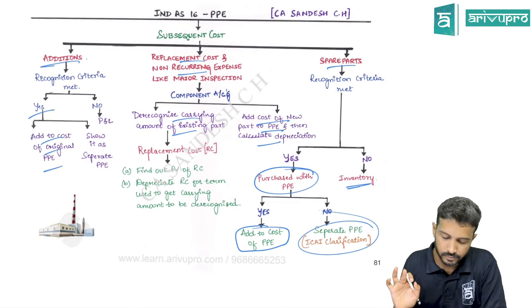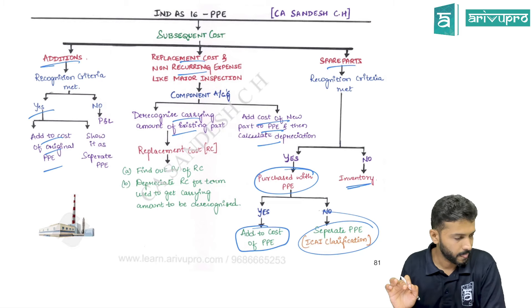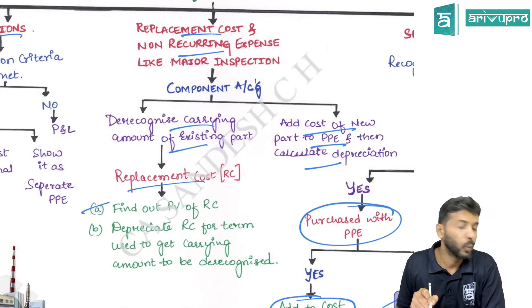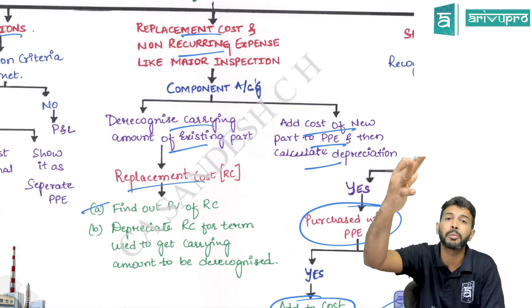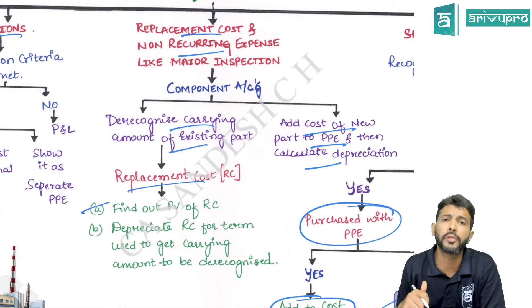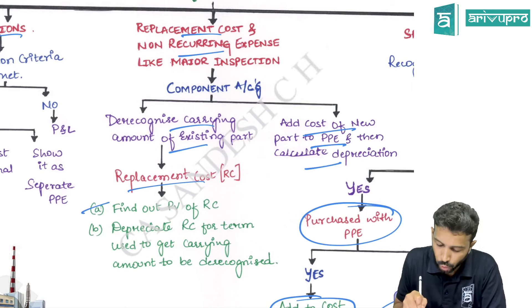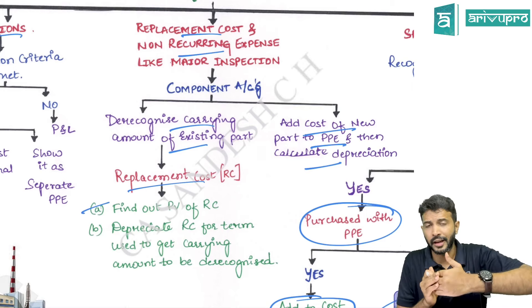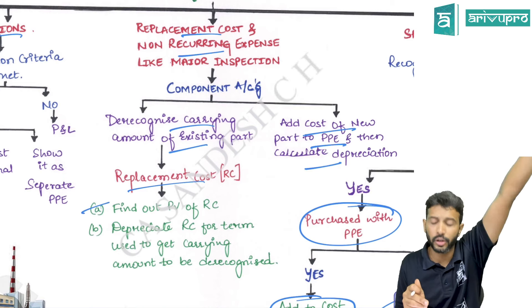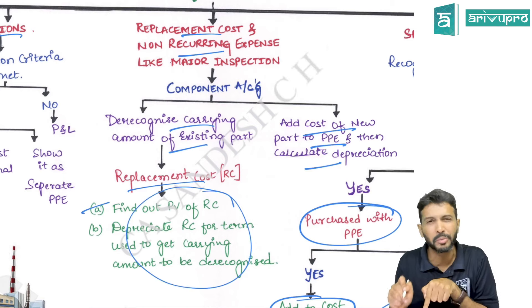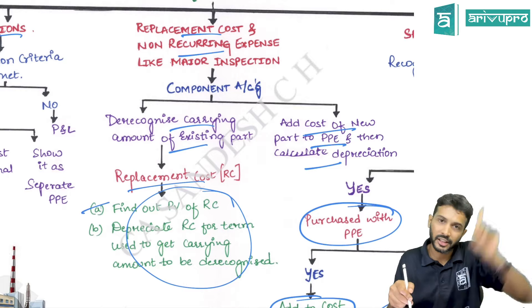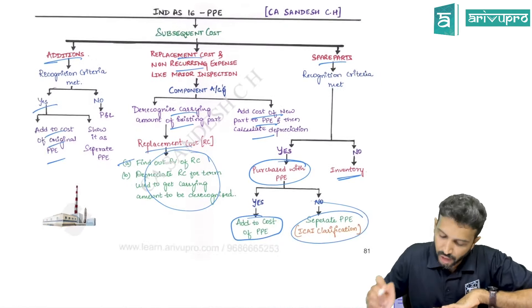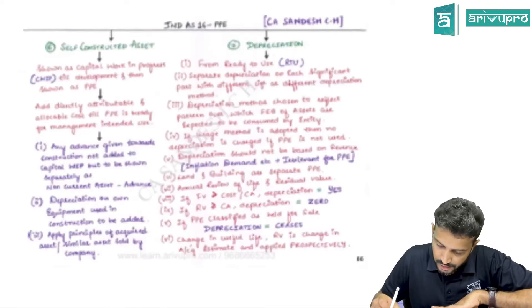There is a problem-specific adjustment for cases where the carrying amount of an existing part is not given — for example, the turbine problem. In that case, use the new part cost, apply a discount factor to find its original cost, and use that as the carrying amount to de-recognize.